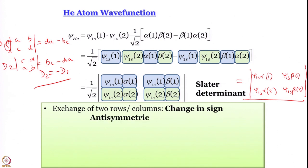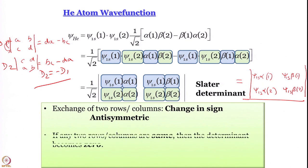Exchange of two rows or two columns leads to a change in sign of the determinant, which means they are anti-symmetric. Remember, our total wave function has to be anti-symmetric. By the property of determinants, you are always going to get an anti-symmetric function - you cannot make the mistake of writing a plus sign. So by writing the wave function in determinant form, you are assured that you have written an anti-symmetric wave function. Another property: if any two rows are the same or any two columns are the same, the determinant becomes zero.